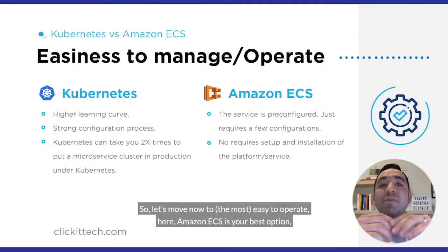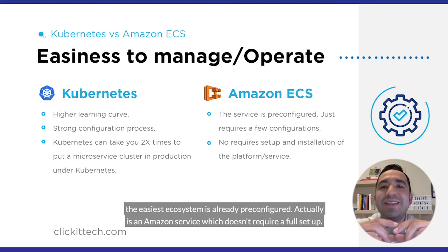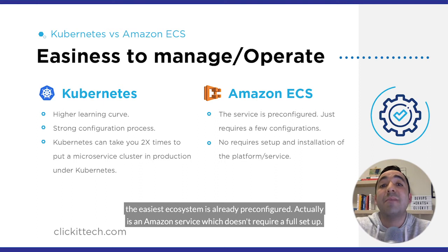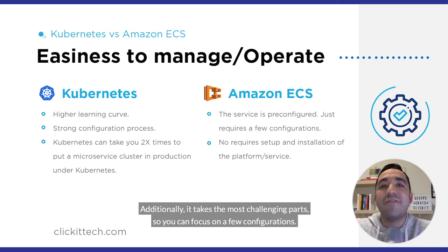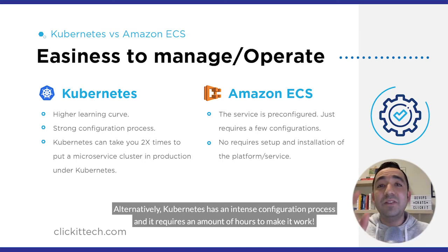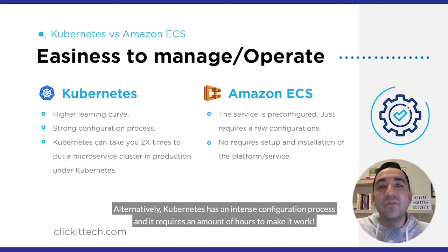Let's move now to ease of operation. Amazon ECS is your best option here. The ECS ecosystem is already pre-configured — it's an Amazon service which doesn't require a full setup. Additionally, it handles the most challenging parts so you can focus on a few configurations. Alternatively, Kubernetes has an intense configuration process and requires a significant amount of hours to make it work.